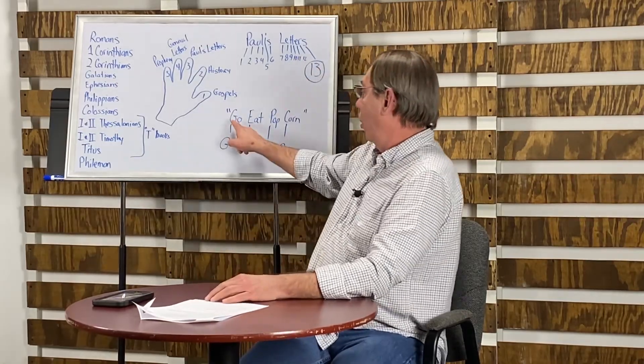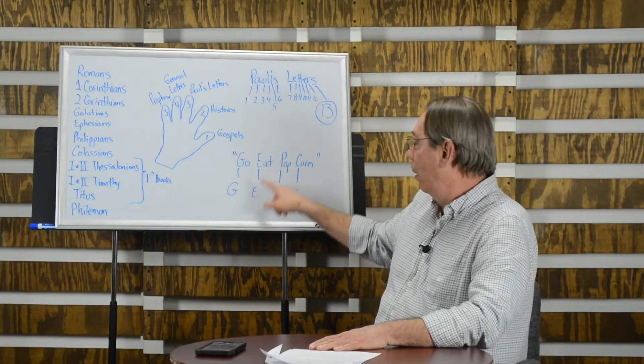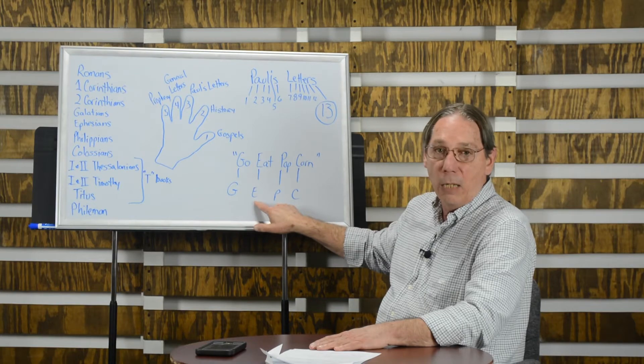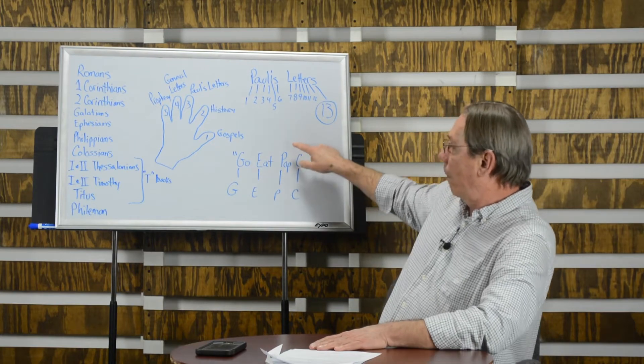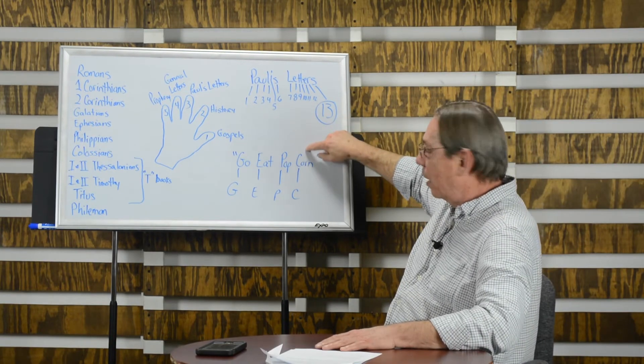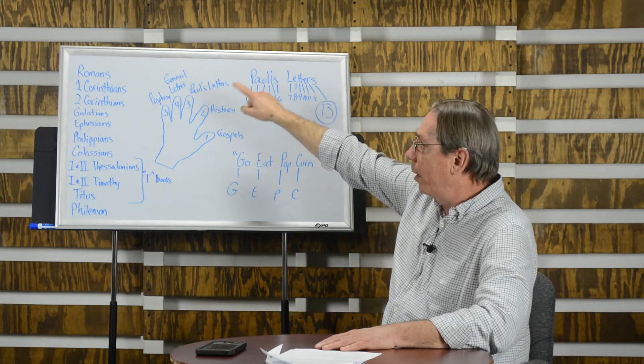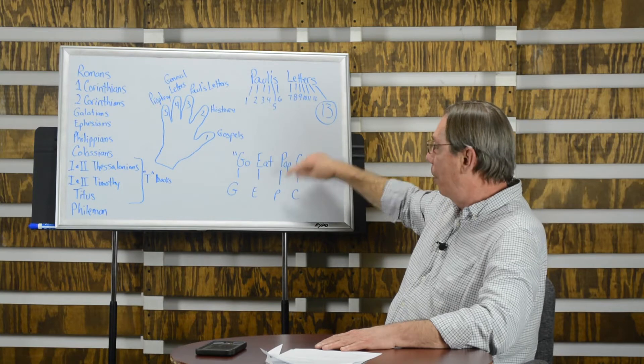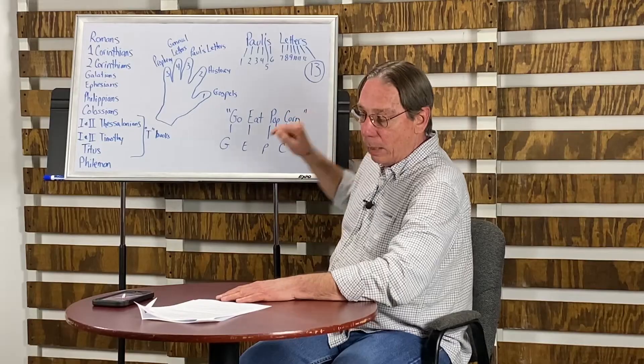So we start out with Romans, first and second Corinthians, and then we're going to stop and we're going to go eat popcorn. Just remember that. Go eat popcorn. Take the first letter from each word. The G is for Galatians, the E, Ephesians. I've lost my place here. The P and the C. Romans, first and second Corinthians, Galatians, Ephesians, Philippians, Colossians. Say those with me again.